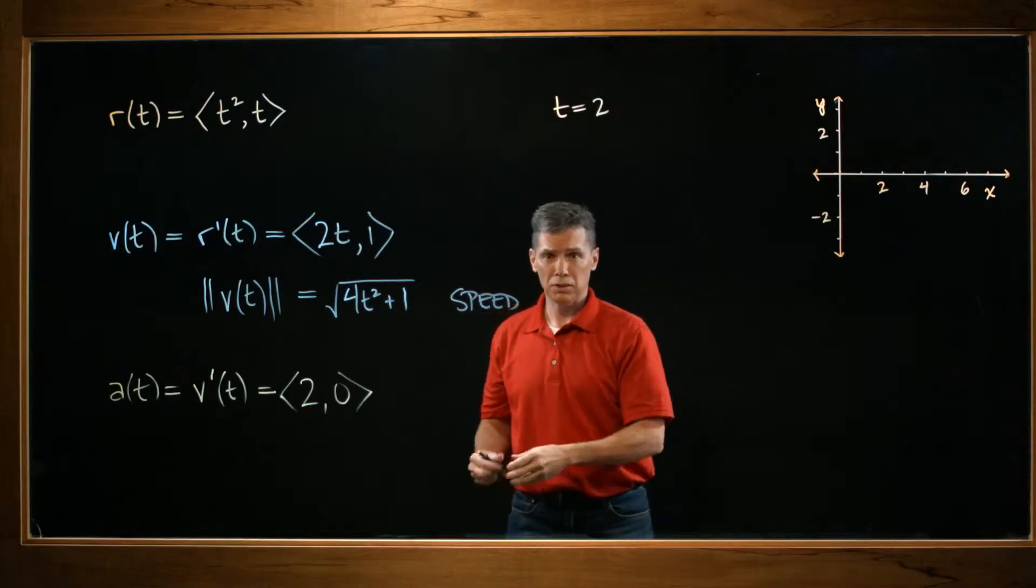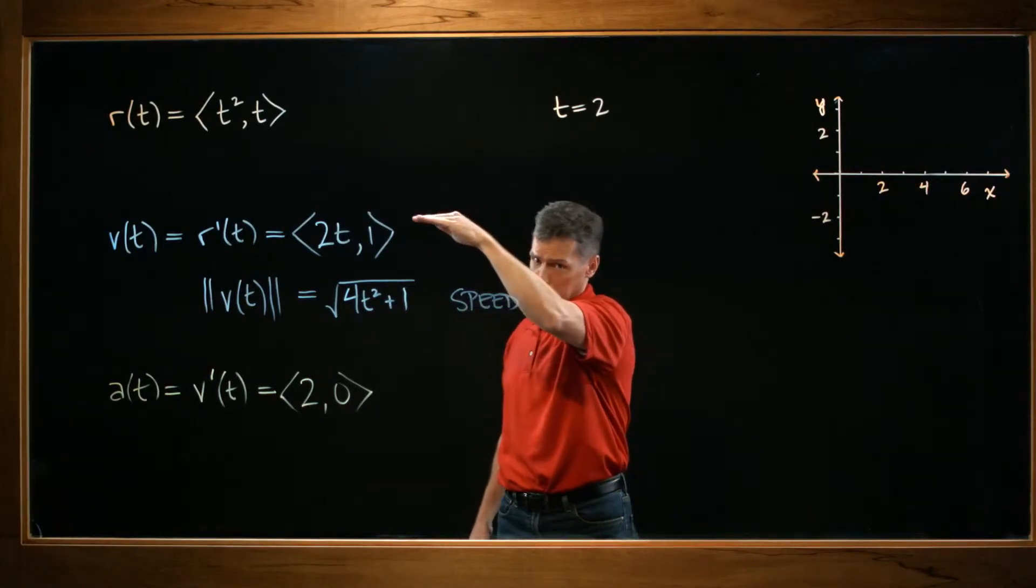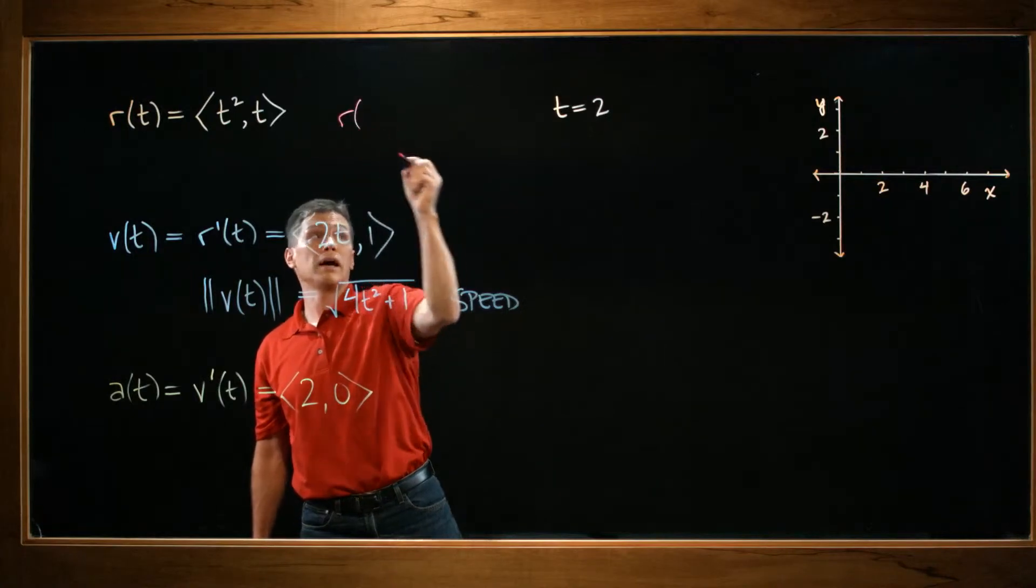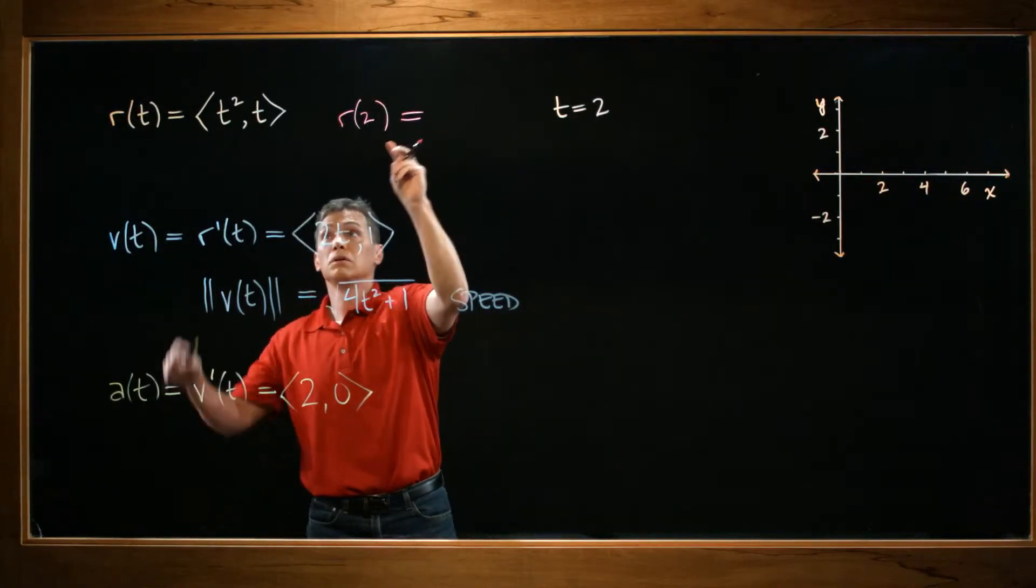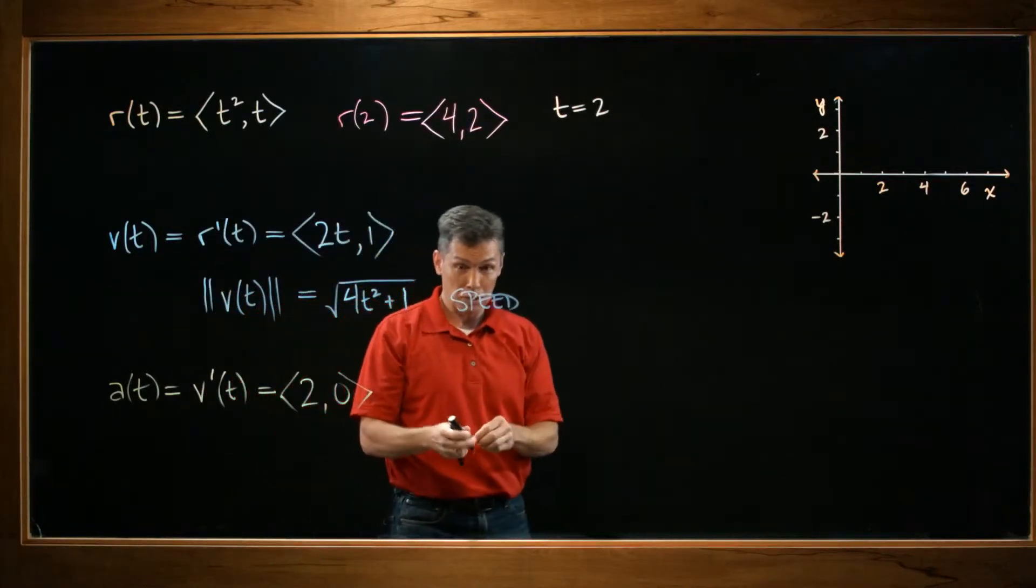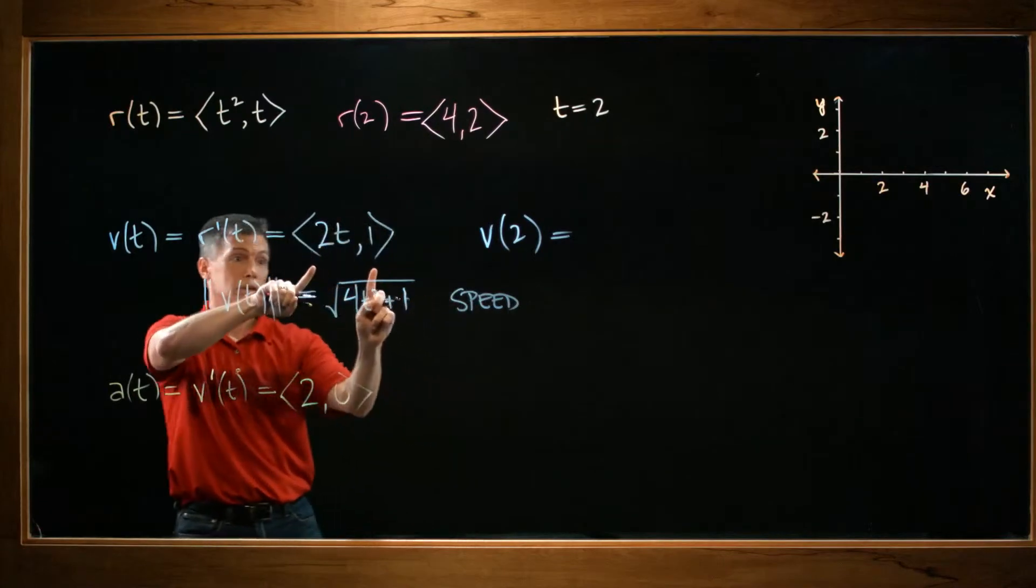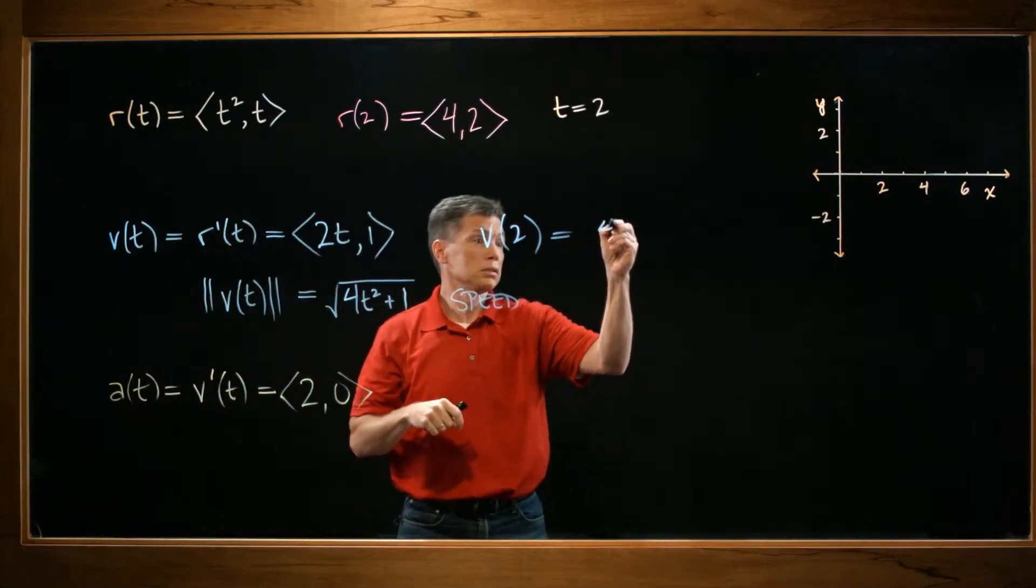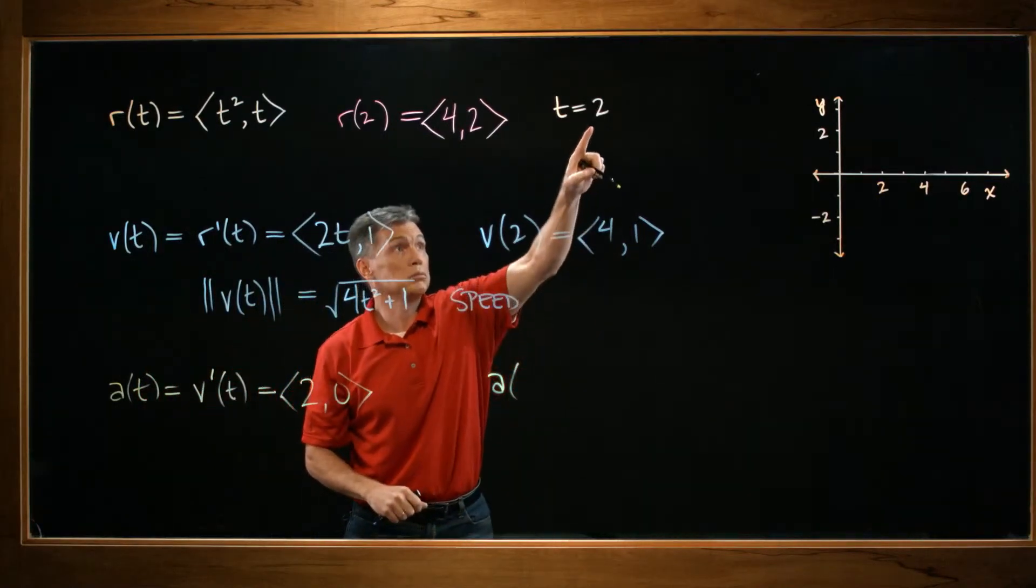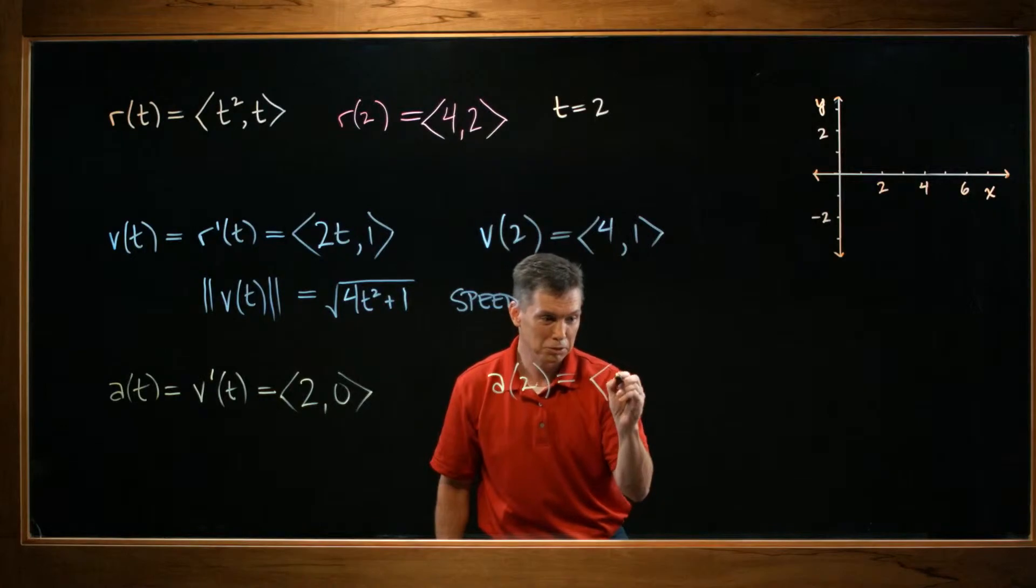They pushed us a little bit further in this problem, just in the sense that they gave us this value of t, t equals 2. And they want us to evaluate some of these. They actually really only specified the velocity and the acceleration. But I am going to throw one more in there. I'm going to find the original function, the position, at that value of 2. So r of 2, which you can see what we're doing is just plugging in here and we get 4 comma 2 as a vector. And now back to what they wanted with my velocity. They asked for the velocity at that value of 2. So I'm plugging in here, right? So 4 comma 1 as a vector. And then finally, they did ask for the acceleration evaluated at that same value of 2. This is the easiest one yet. Because when you go to plug a 2 in for t there, there is no t. So it's just 2 comma 0.